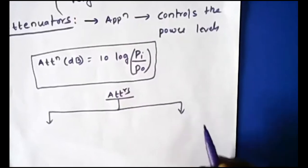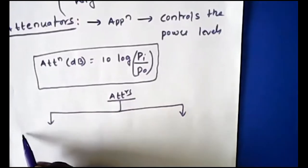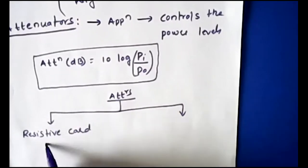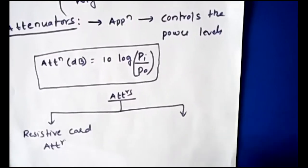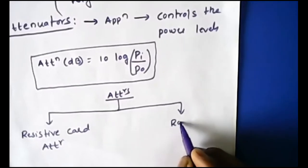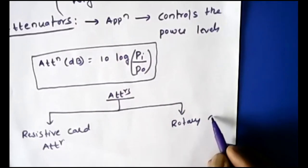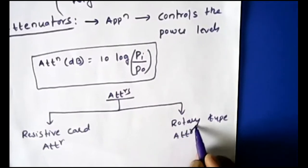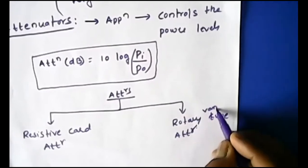Attenuators are classified into two types. The first is the resistive card attenuator. The second classification is the rotary type — we can call it the rotary vane type attenuator.